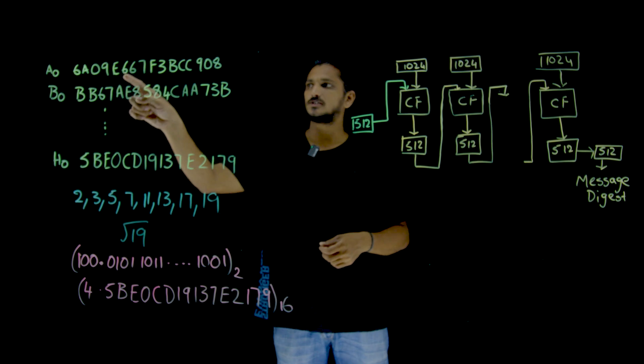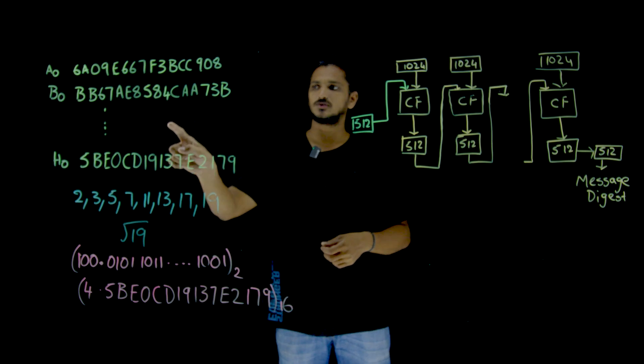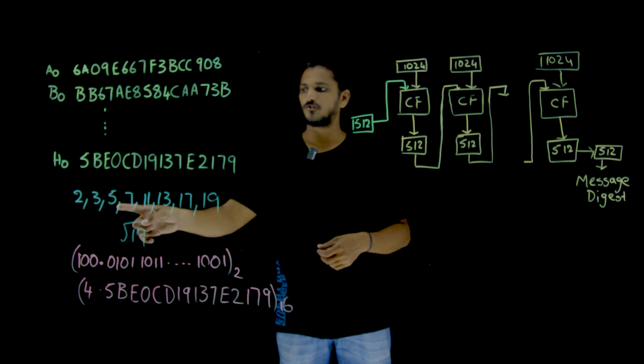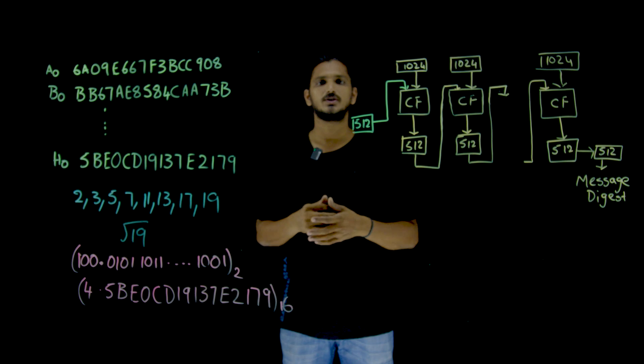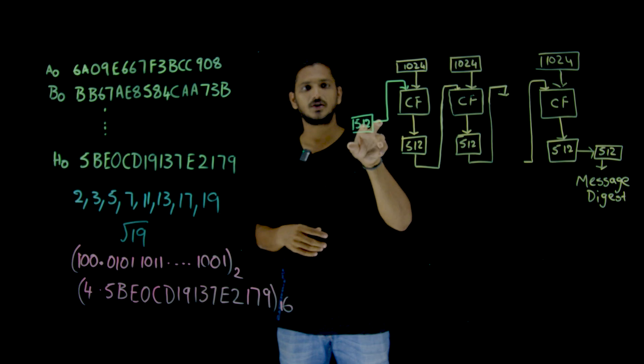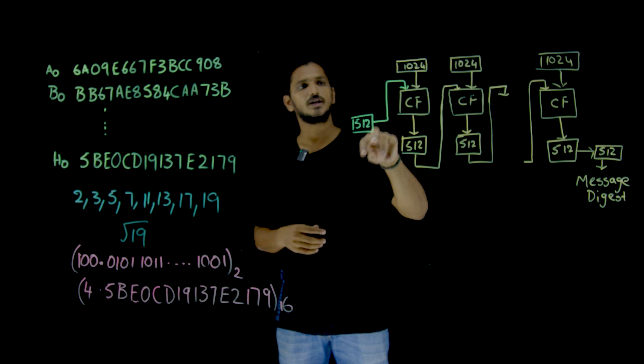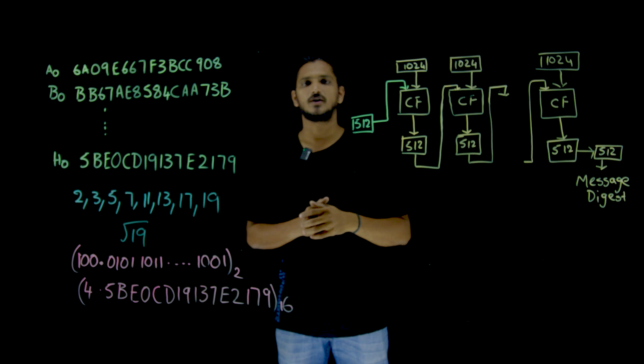Like this, if you want to generate this, square root of 2, square root of 3, next one C naught means square root of 5, next one means square root of 7. These are the values which we considered as our constants, the first 512 bits which we are going to send into the compression function. This is what the initialization message digest.